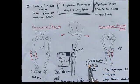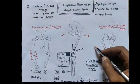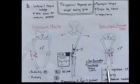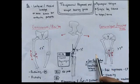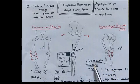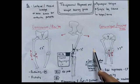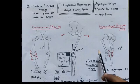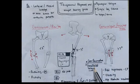Also worth mentioning is genu recurvatum, which is increased extension of the knee, and functional valgus. Functional valgus is when a person has normal knees in standing position, but when going into a squat the knee goes into valgus — that is called functional valgus.